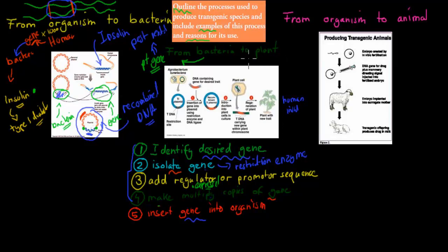To put the bacteria gene into the plant, we find a certain bacteria and take the BT gene using restriction enzymes. First, identify the desired gene — the BT gene — then restrict and take it out. Then we take that BT gene and put it into a different type of bacteria, one which will actually invade a plant cell. After putting it into this new bacteria, it will invade the plant cell and recombine its DNA with the plant cell DNA. Now the plant cell has the DNA to make BT, and we can make copies of that plant — a plant which can produce BT anti-pest protection.